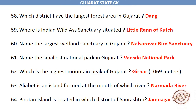Which district has the largest forest area in Gujarat? Dang. Where is the Indian Wild Ass Sanctuary situated? Little Rann of Kutch. Name the largest wetland sanctuary in Gujarat: Nal Sarovar Bird Sanctuary. Name the smallest national park in Gujarat: Vansda National Park. Which is the highest mountain peak of Gujarat? Girnar, 1,069 meters.